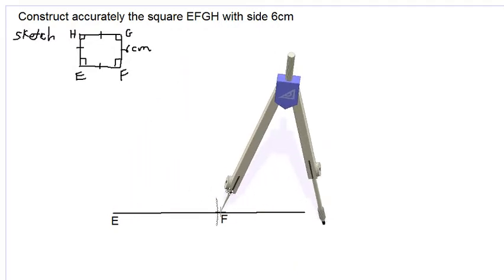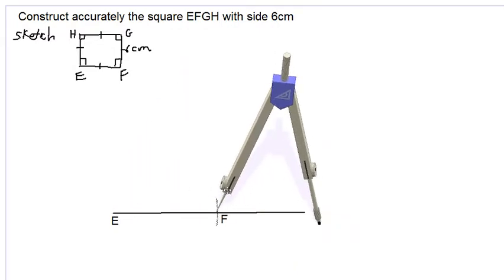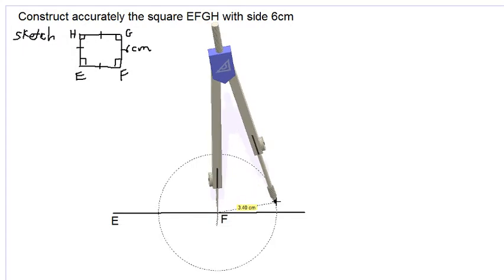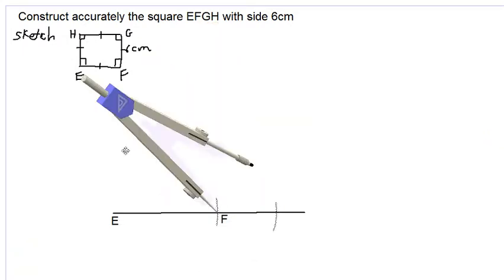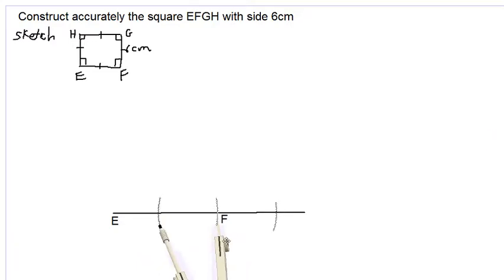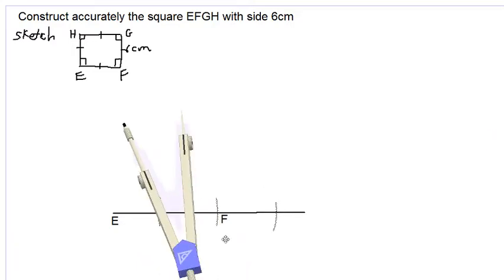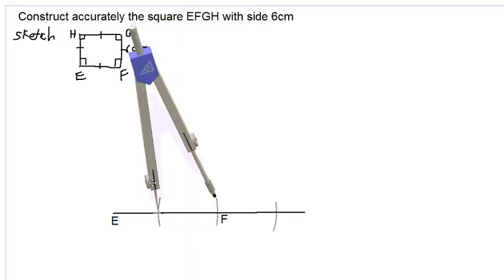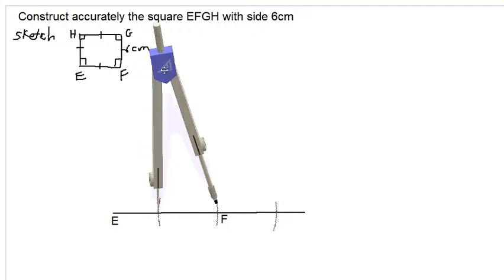We now want to construct a 90 degree angle at point F. We move the point of our compass to point F and stretch out the arm until it can cut the line. Using our lighter pencil, we make a construction arc, then swing the compass around — do not change the radius — and make another construction arc.